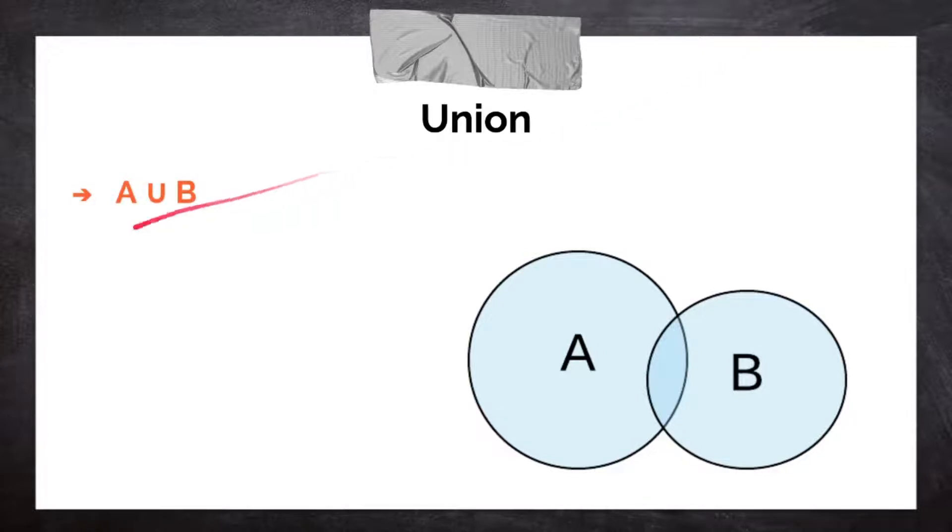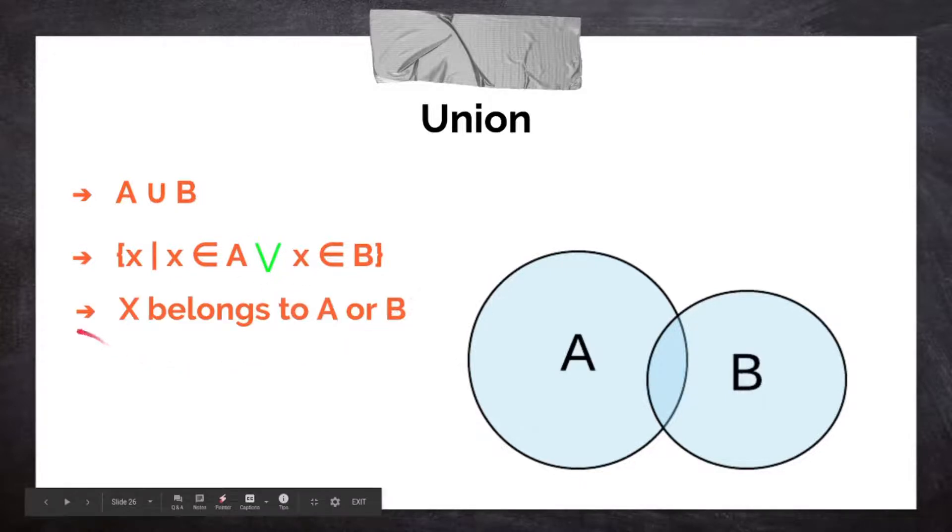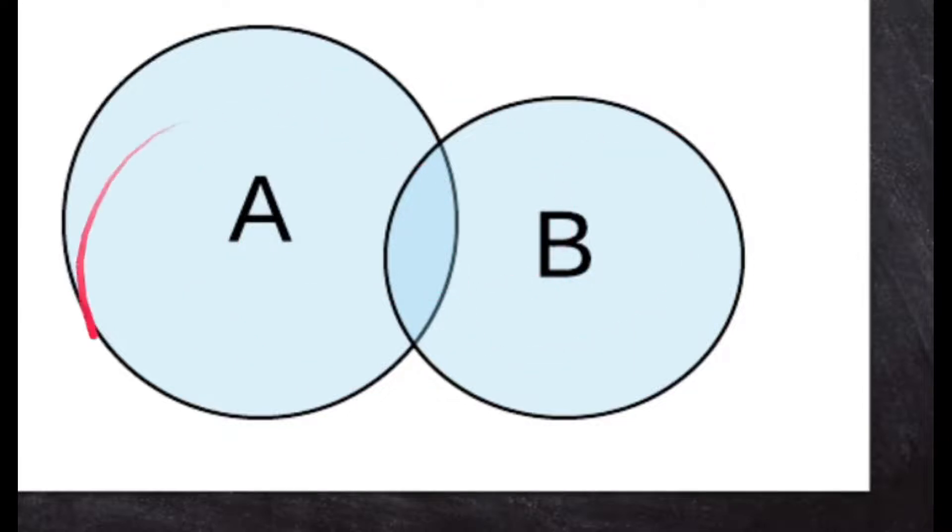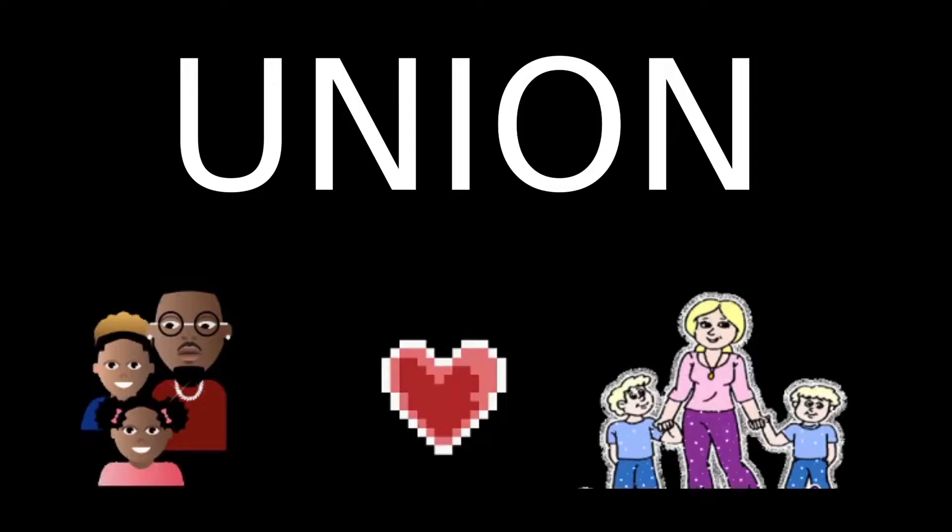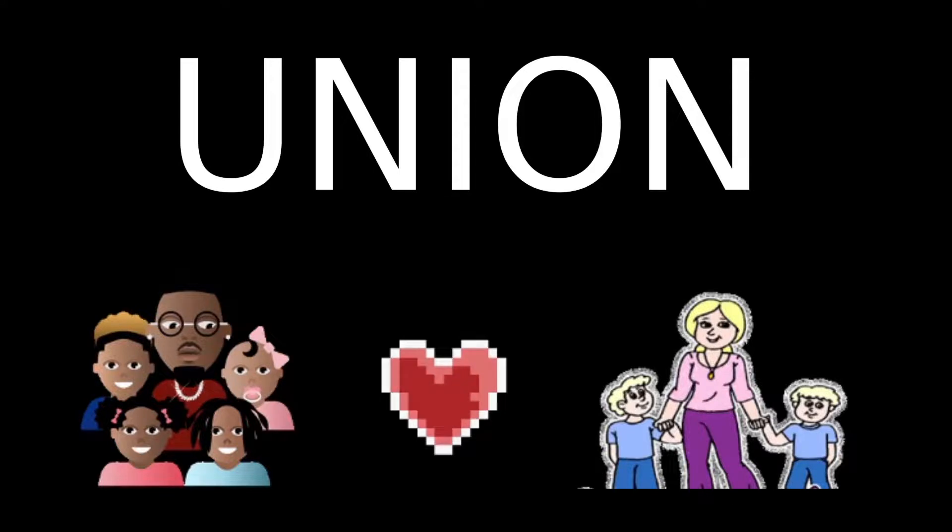A union B is going to be this whole shebang. X, such that X is an element in A, or X is an element of B. So X is part of A union B if it's a member of A or B, so this whole diagram. It's both of them joined together, the union between two sets.